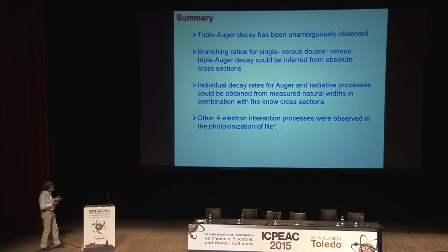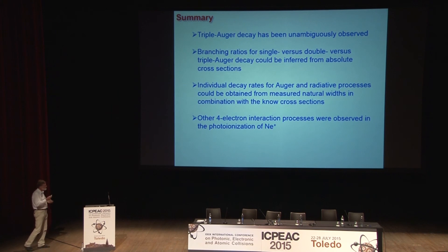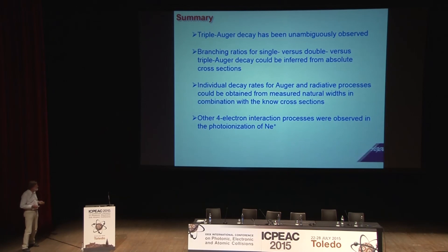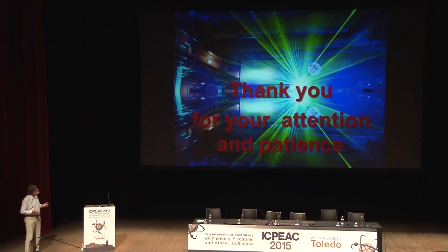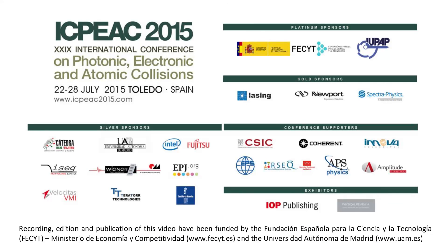I mentioned that in the triple ionization of neon 1+ there are very complex four-electron interaction processes necessary to explain what we observe, but I didn't go into the details — I hope you saw the poster today. At this point, I thank you for your attention and for your patience.